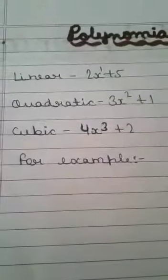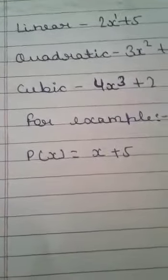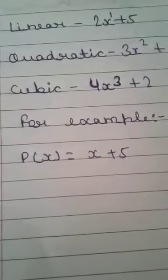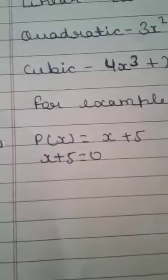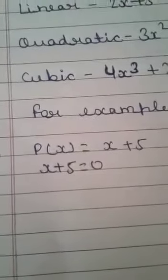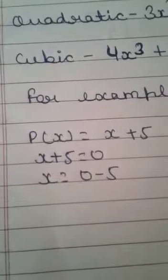So let us take an example of polynomial. Suppose we have P(x) equals x plus 5. Here x plus 5 is our equation. x plus 5 equals 0. We have 0 because x plus 5 equals nothing. Now x equals 0 minus 5.